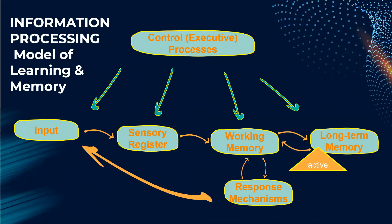This is the information processing model that incorporates processing stages. The information processing begins with a stimulus input — for example, visual or auditory. The stimulus input impinges on one or more senses such as hearing, sight, or touch. The appropriate sensory register receives the input and holds it briefly in a sensory form. It is here that perception occurs, which is the process of assigning meaning to a stimulus input.